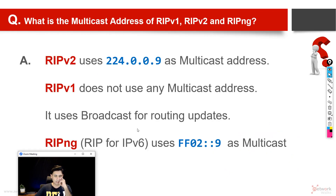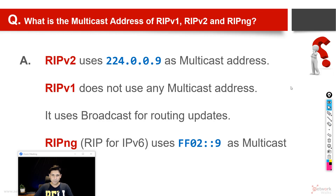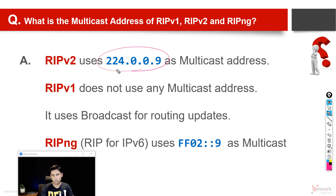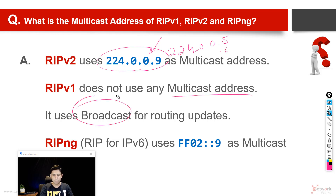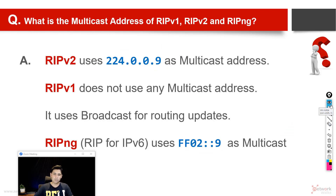Another question the interviewer might ask is: what is the multicast address of RIP version 1, RIP version 2, and RIP NG? There are three versions — version one, version two, and NG which is for IPv6. RIP version two uses 224.0.0.9 as its multicast address. For comparison, OSPF uses 224.0.0.5 and 224.0.0.6. RIP version one does not use multicast at all — it uses broadcast for routing updates. RIP NG uses the IPv6 address ff02::9 for multicast. So RIP version two and RIP NG support multicast, while RIP version one uses broadcast.